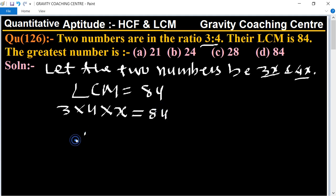So therefore x equal to 84 upon 3 multiply 4. Cancel by 4, cancel by 3, we get 7. So x equal to 7. Therefore the greatest number equal to: